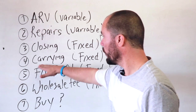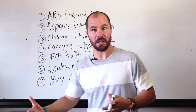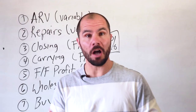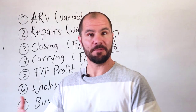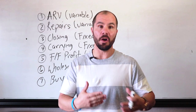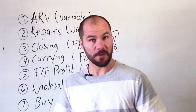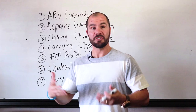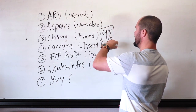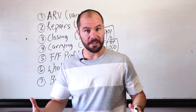Number four is our carrying cost, referring to the cost of capital. It costs money to borrow capital to buy and fix a house. This includes interest, points, and other fees for the money. This number is also fairly predictable, so I conservatively budget 6% of ARV for carrying costs.